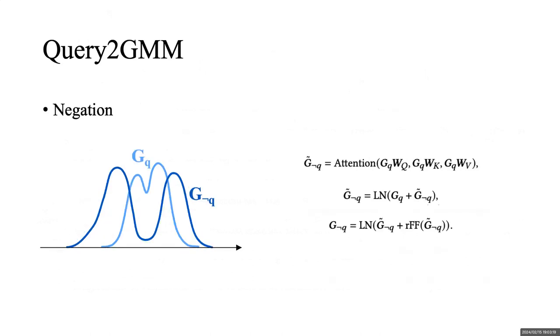For negation operator, we utilize self-attention block layer to identify the complementary set according to the global cross-correlation among the components of the input entity set.